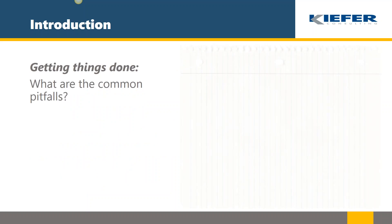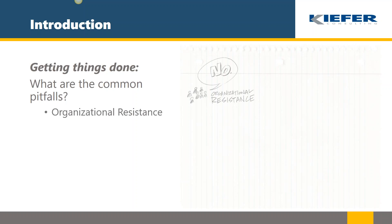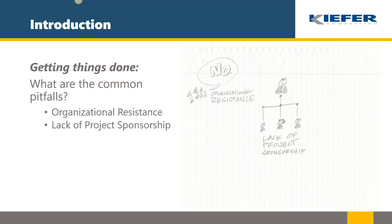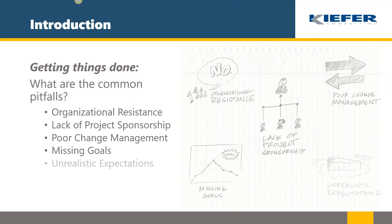What we're really here to talk about is getting things done — how do we get people involved? As consultants, we come in hyper-focused on getting our piece of the project done, but that requires connecting with and getting time from people who have their own work to do. The common pitfalls in getting things done are: organizational resistance, lack of project sponsorship, poor change management, missing goals, and unrealistic expectations.